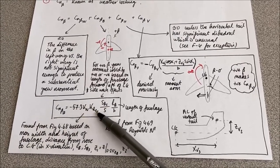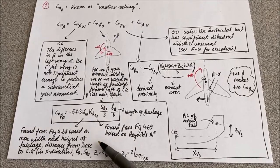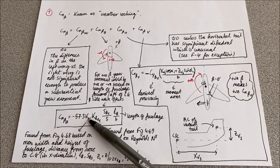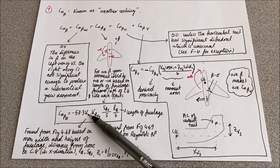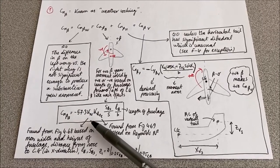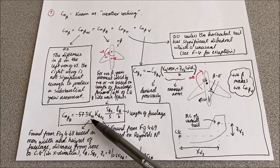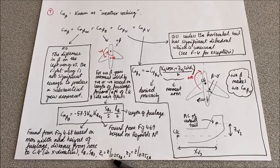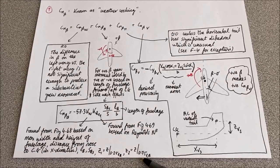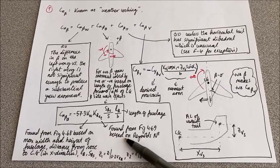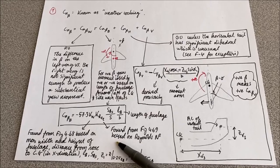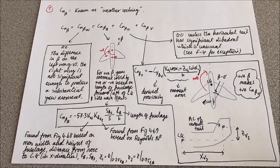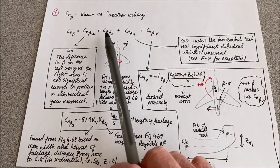The two K coefficients in that equation are found by eyeballing charts given in the textbook — figures 4.68 and 4.69 respectively. The first K is based on geometric characteristics of the aircraft: height and width of the fuselage, x-distance from the nose to the center of gravity, and fuselage height at 25% and 75% of the body length. The second coefficient, K_rel, is based only on the Reynolds number calculated using the fuselage length.